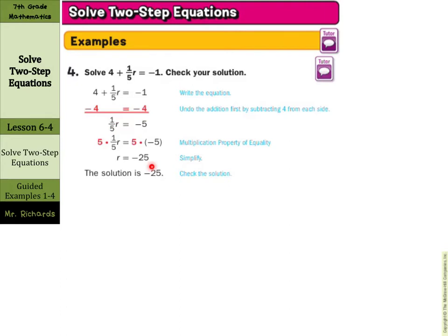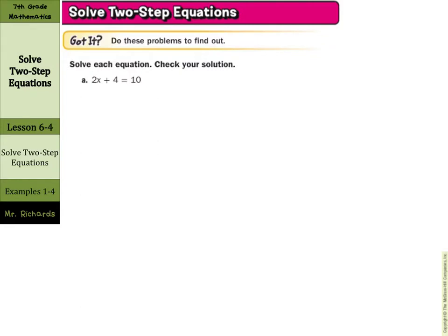Let's try a lot of these on our own. 2x plus 4 equals 10. If you need a separate sheet of paper to write these down, if you've run out of room, please feel free. We need to undo the addition first, and the way we're going to do that is by subtracting 4 from both sides of our equation. And as this cancels out, we are left with 2x equals 10 minus 4, which is 6. To undo our multiplication here, divide by 2 on both sides. This cancels out, and we are left with x equals 3.